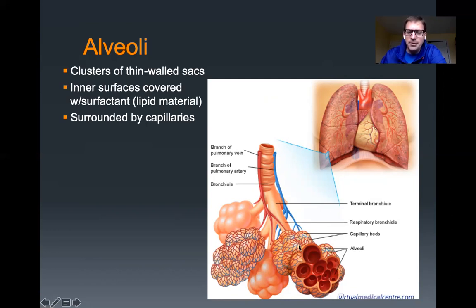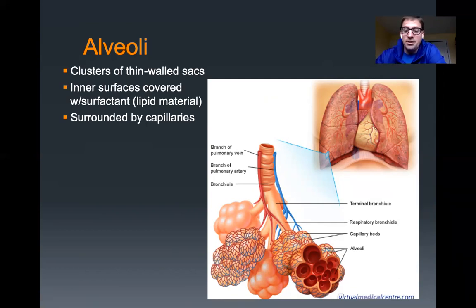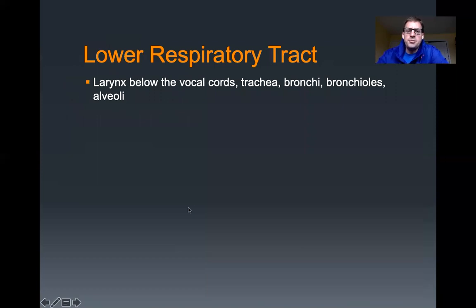The purpose of having those capillaries around the alveoli is for gas exchange. When you breathe in, oxygen gets all the way down into the alveoli and leaves to go into your blood. Carbon dioxide, being brought to the lungs by the pulmonary arteries, eventually gets into those capillaries, leaves the capillaries, goes into the alveoli, and you exhale the carbon dioxide. The lower respiratory tract is made up of the larynx below the vocal cords, the trachea, the bronchi and bronchioles, and alveoli.